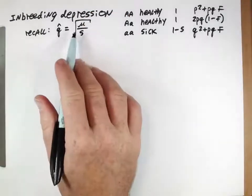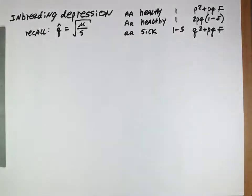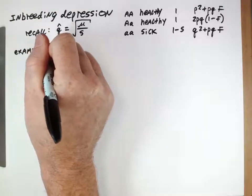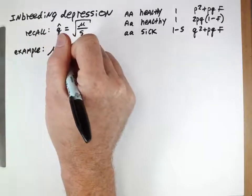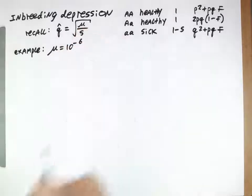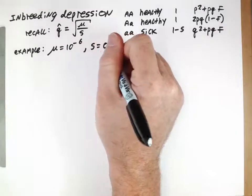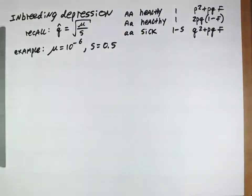Let's do an example of the effects of inbreeding using a couple of realistic parameters. Let's assume that the mutation rate is about 10 to the minus 6, which is the approximate mutation rate for any given locus, and we'll assume a selective disadvantage of 50%.